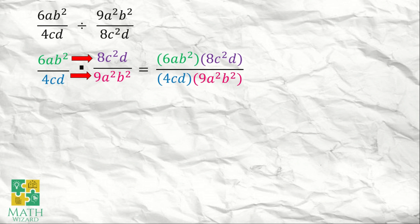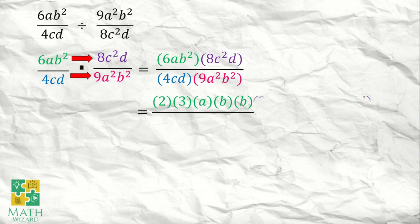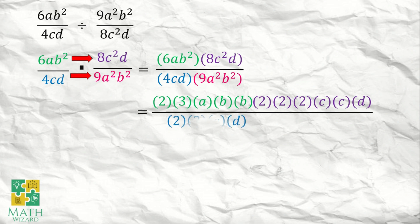What's the next step? We need to factor each monomial. So 6ab squared becomes 2 times 3 times a times b times b. 8c squared d becomes 2 times 2 times 2 times c times c times d. Over 4cd, which becomes 2 times 2 times c times d.